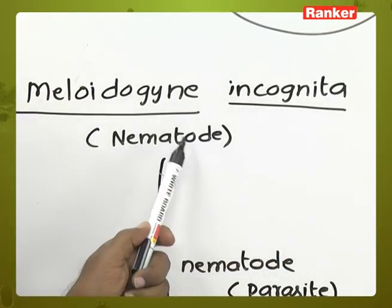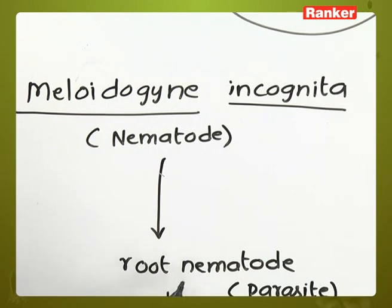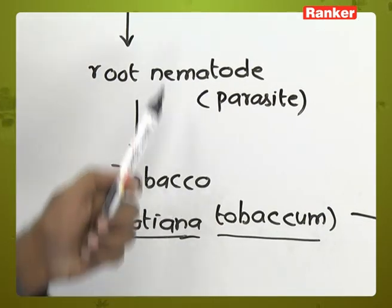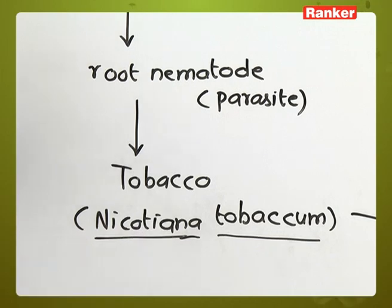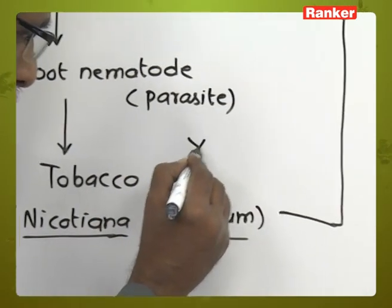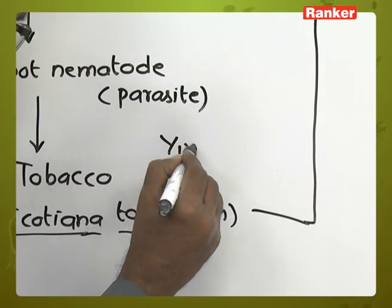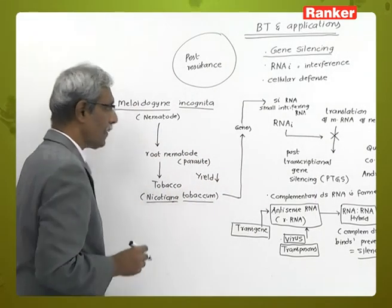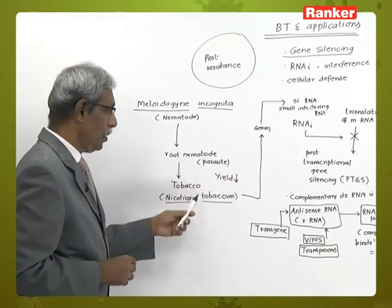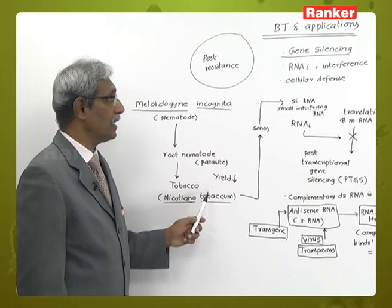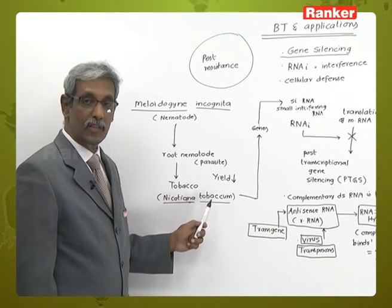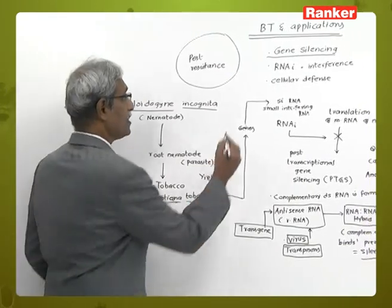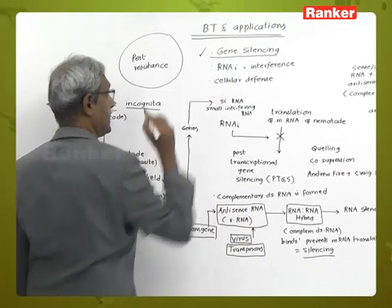Meloidogyne incognita is a root nematode, hence it is parasitic onto tobacco. When it is parasitic on tobacco, there is a reduction in the yield of tobacco. Now normally to prevent this infection, there is a very important molecular technique termed as gene silencing.